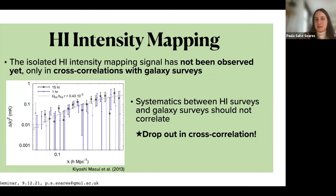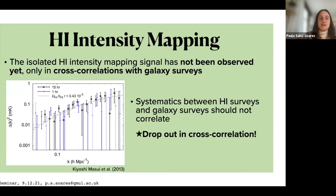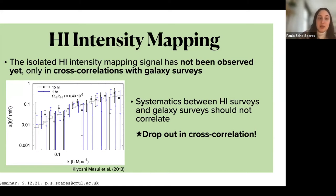MeerKAT, which is SKA's pathfinder, is already operational and taking data. From the calibration paper last year, you can see an example HI intensity map, but you can't really see a lot of structure because it still has foregrounds on top. The isolated HI intensity mapping signal — the HI power spectrum in autocorrelation — has not been observed yet, only in cross-correlation with galaxy surveys. This is because HI intensity mapping surveys are still dominated by systematic effects, but those systematics shouldn't correlate with a galaxy survey, so they drop out in cross-correlation. We have detected the cross-correlation signal of HI with galaxies, from which you can get omega-HI, the cosmic abundance of HI at a particular redshift.